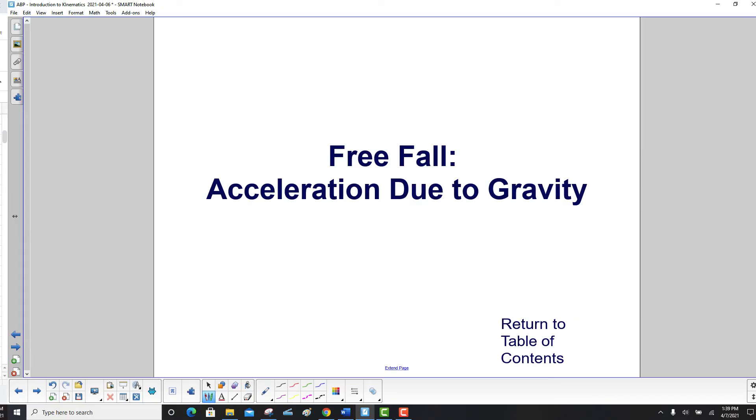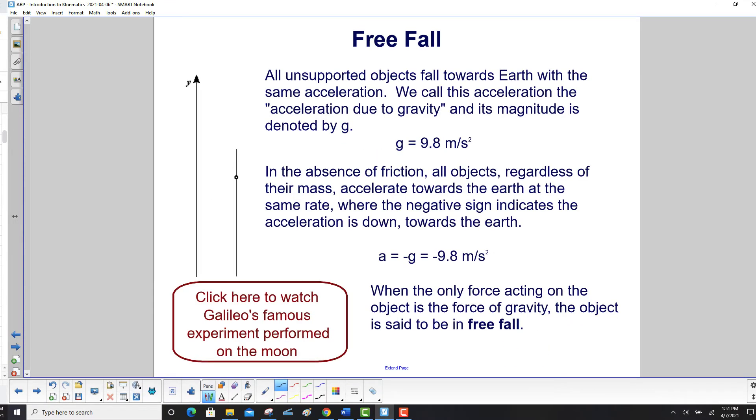Free fall, acceleration due to gravity. All unsupported objects fall towards Earth with the same acceleration. We call this acceleration the acceleration due to gravity, and its magnitude is denoted by g, where g is 9.8 meters per second squared.